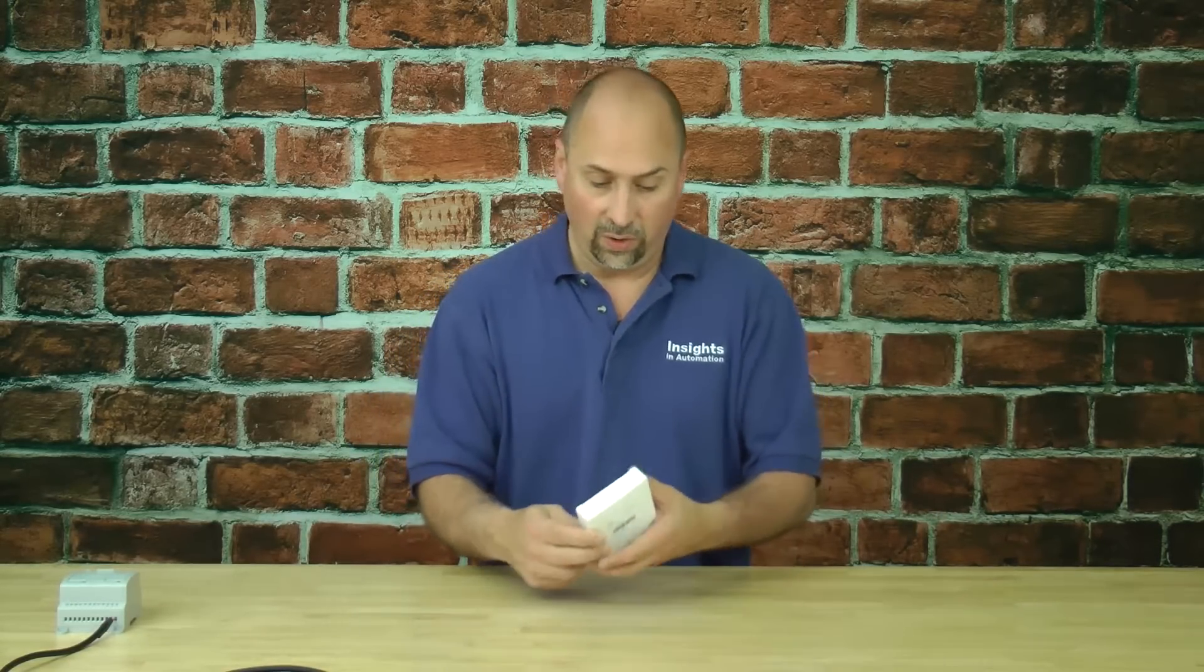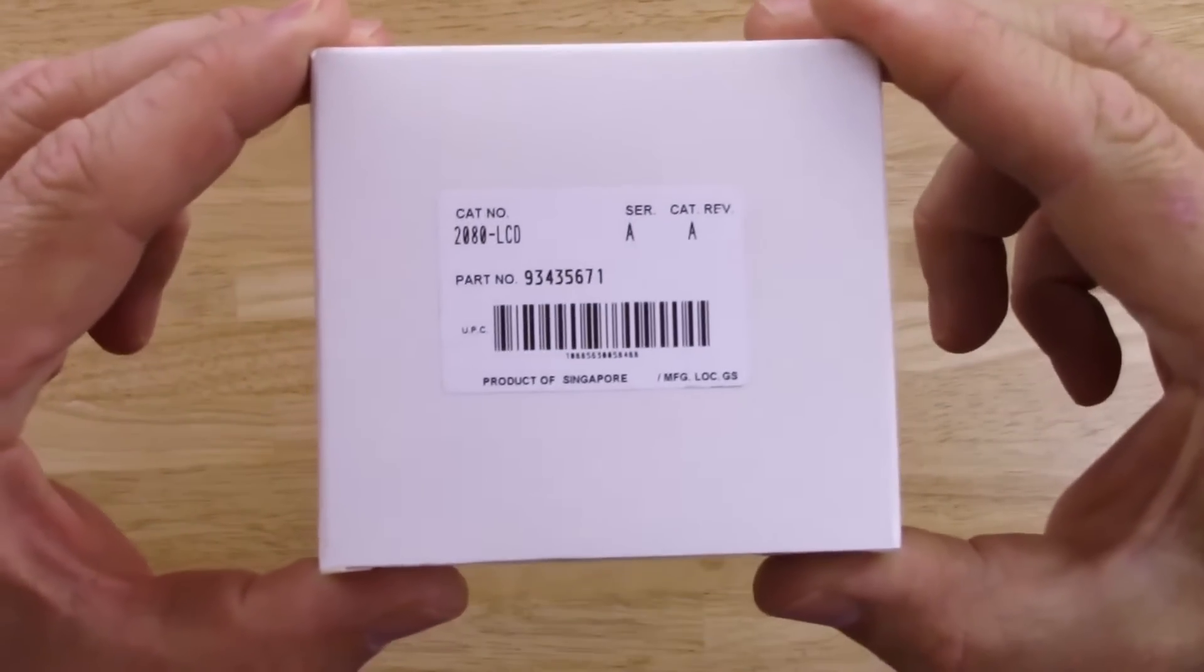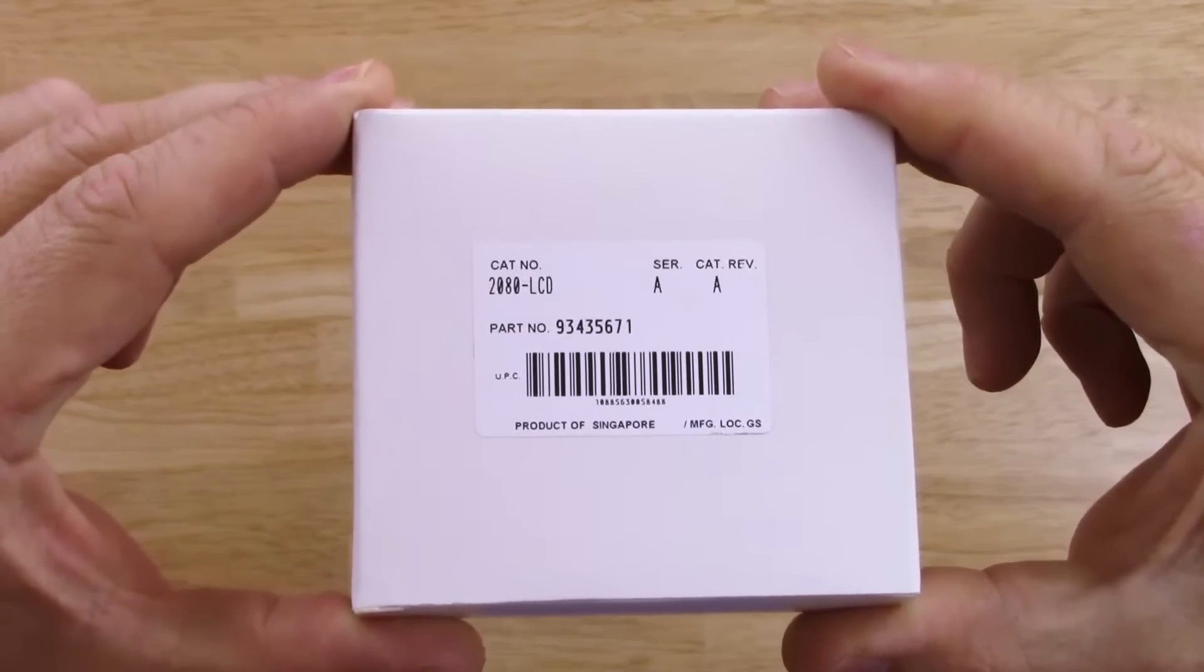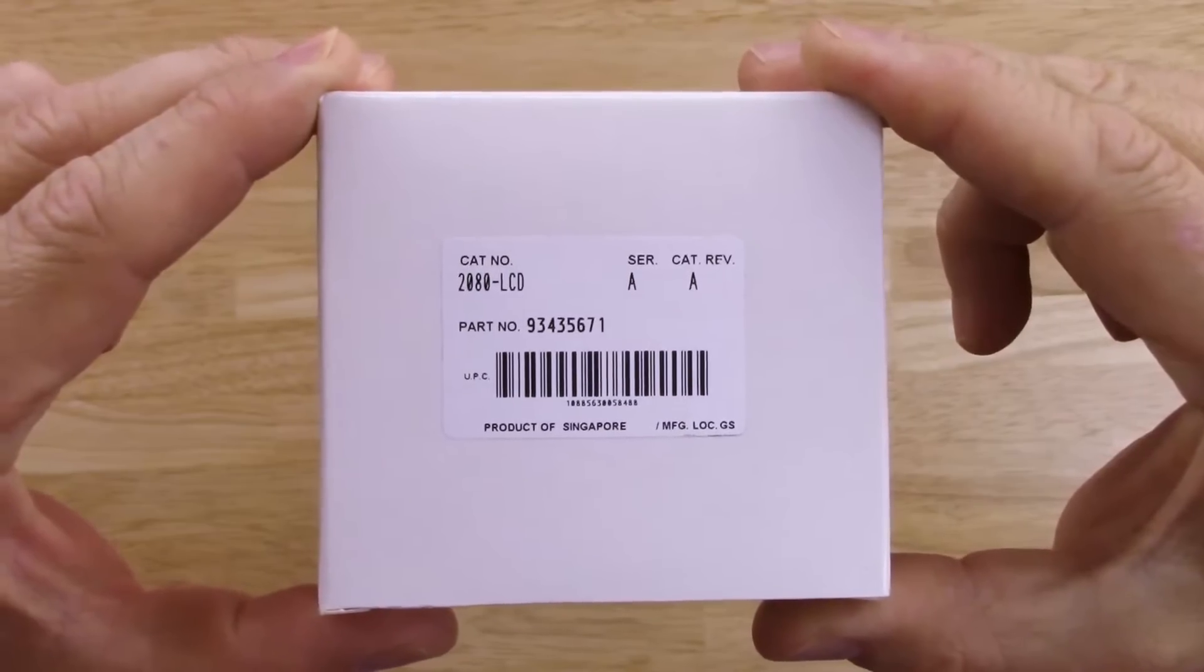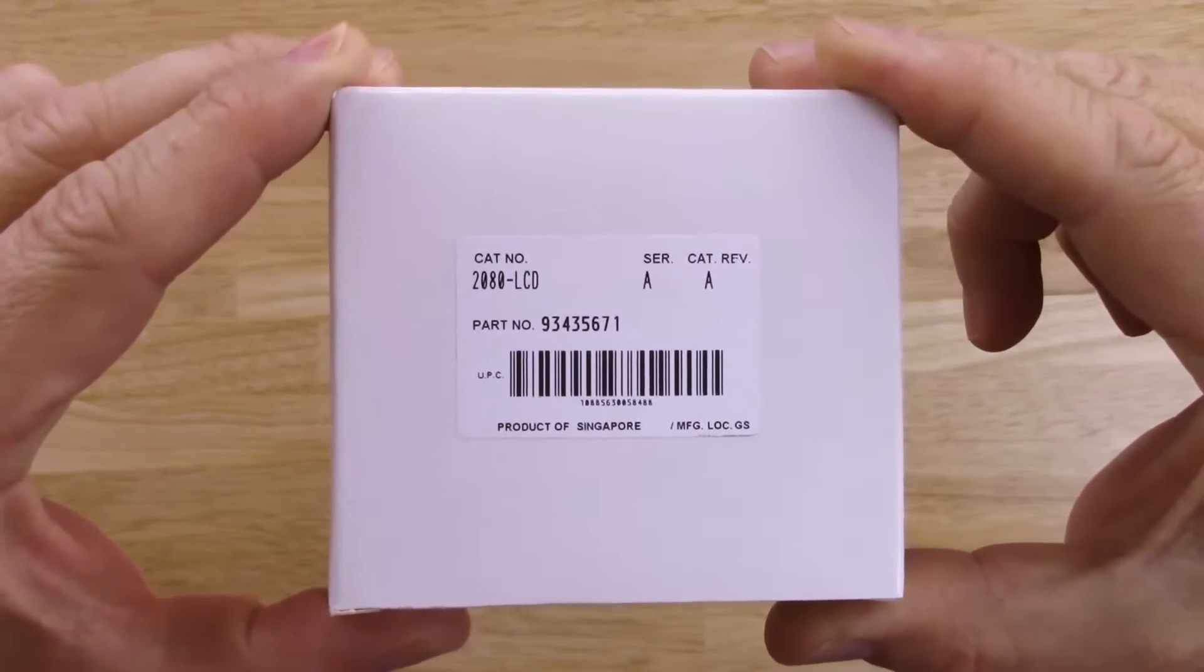Here I have an LCD module for the Micro 810. Let's go ahead and take a close-up look at the box. You can see the part number catalog number is 2080-LCD, and this just happens to be a Series A Rev-A that I have here.